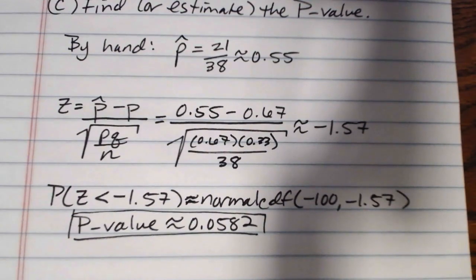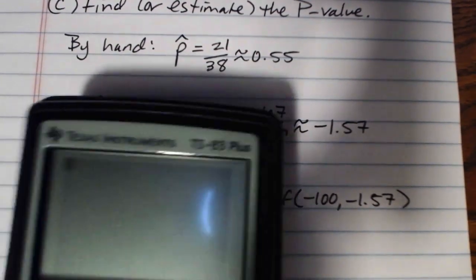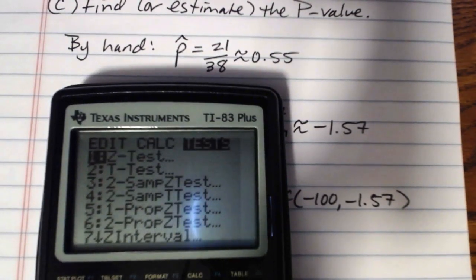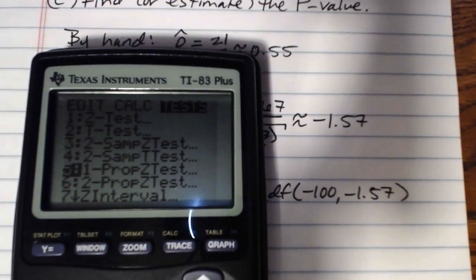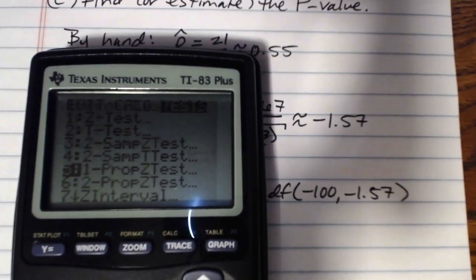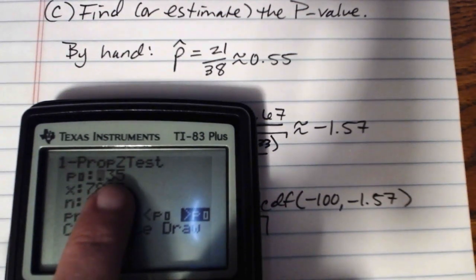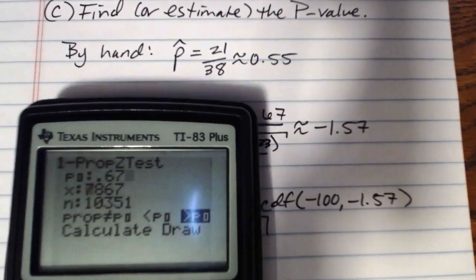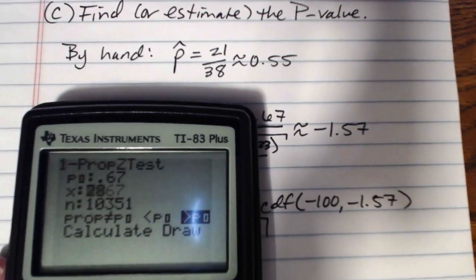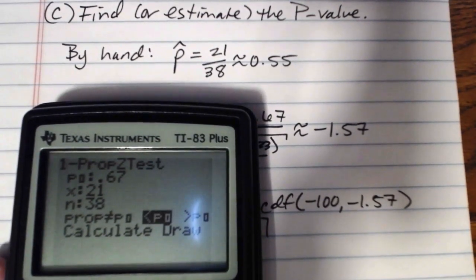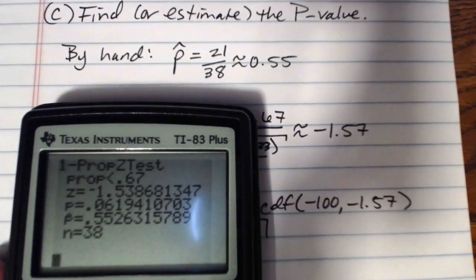If we're not going to do this by hand, in the calculator, the thing that we would use is the one prop Z test. So we go to stat, over to the right to tests, down to one prop Z test. You want to select one prop Z test. Then what it'll ask you for here, the P sub 0 is the P value from your null hypothesis. That's lowercase p. So in this case, that was .67. X is the number of successes in your sample. We had 21. N is the sample size. We had 38. And then you select your alternate hypothesis. We were testing a less than, so we want to select the one in the middle that has the less than symbol. And then we calculate. And we've got a .0619.